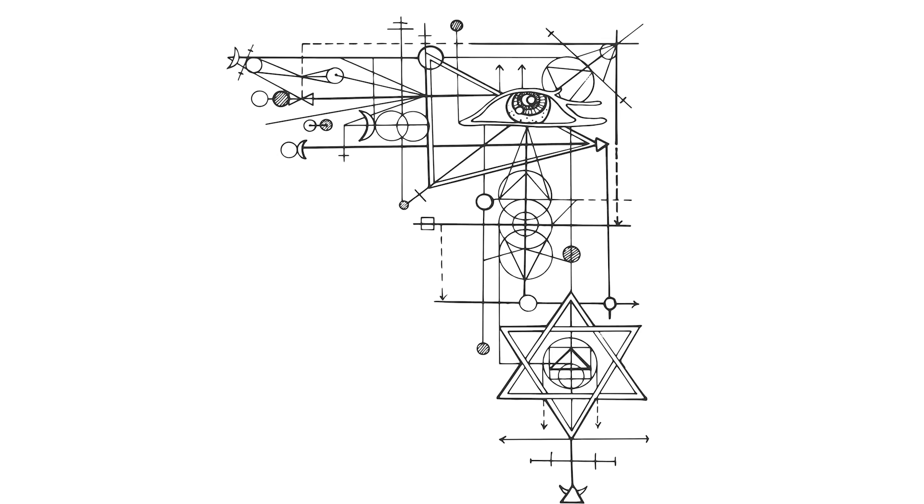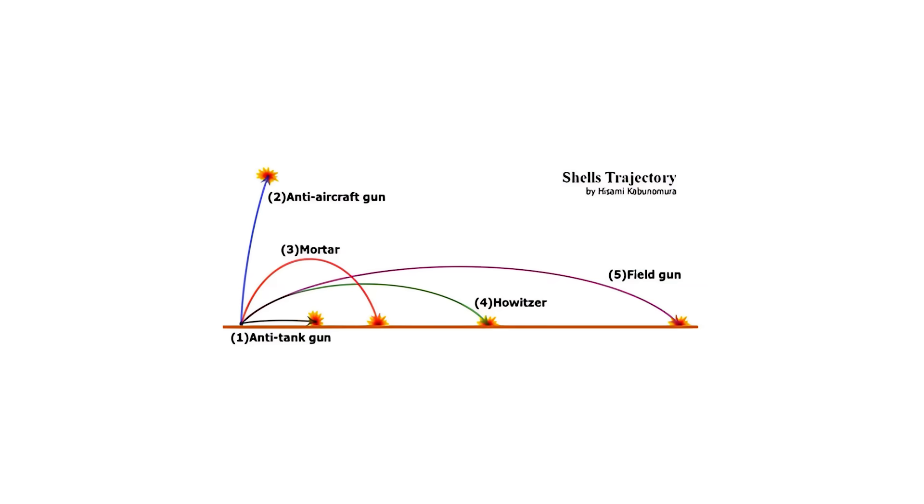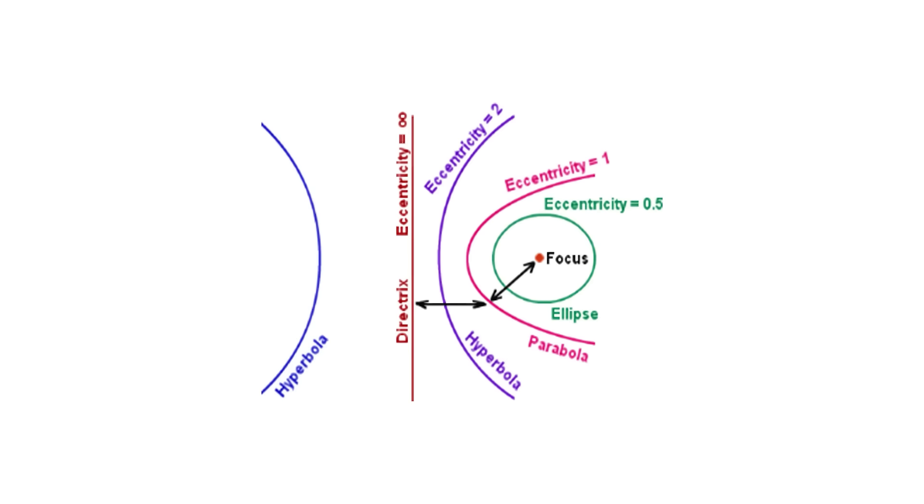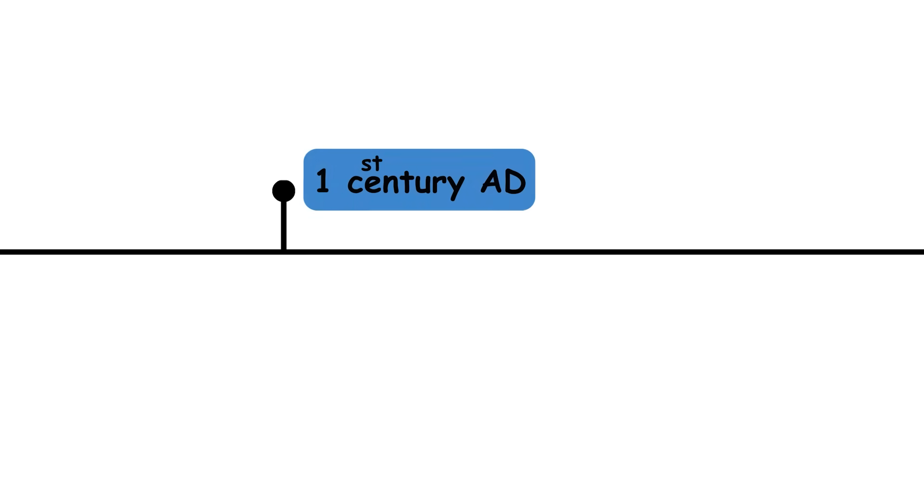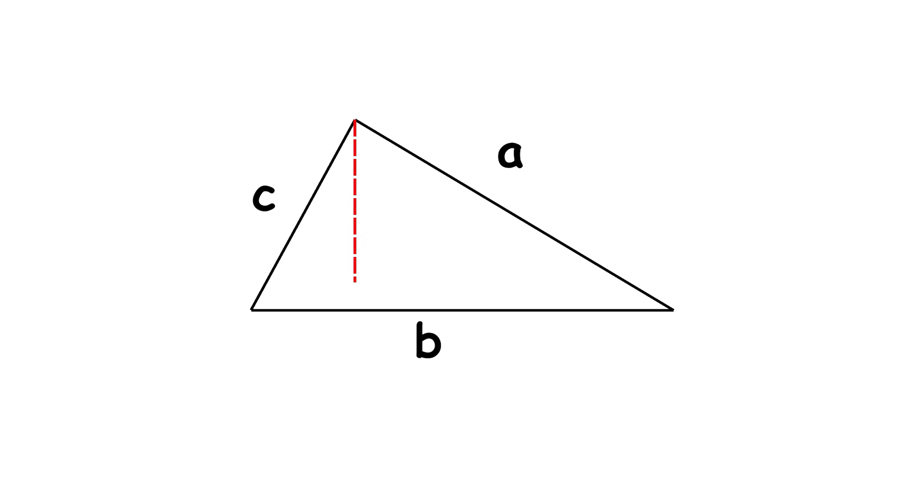First century AD: Heron's formula. Heron's formula allows the area of a triangle to be calculated from its three sides without needing to know its height. It is fundamental in geometry, trigonometry, and practical applications such as engineering and topography.